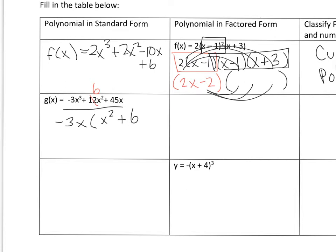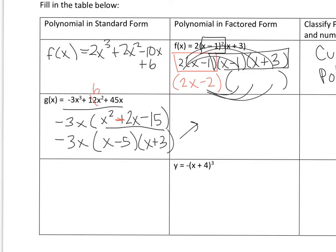If I change that to a 6, this is going to turn into 2. Then divide negative 3 by 45 and you get negative 15. So this is actually a negative 2 if I factor out a negative 3. So then I'm going to factor this further and get negative 3x times x minus 5 times x plus 3. So g of x equals negative 3x times x minus 5 times x plus 3.